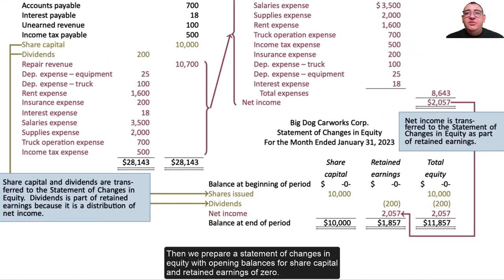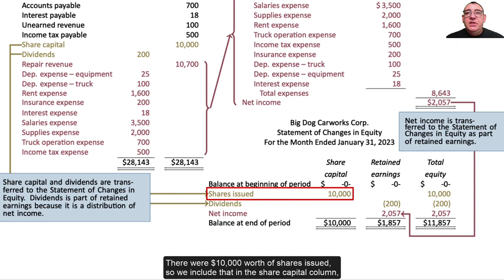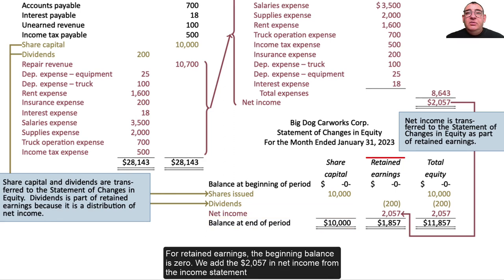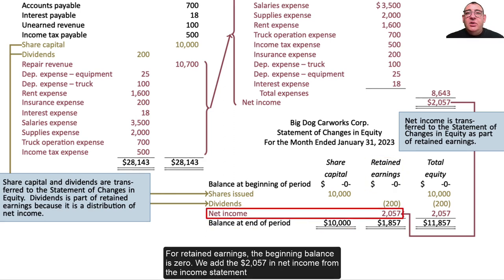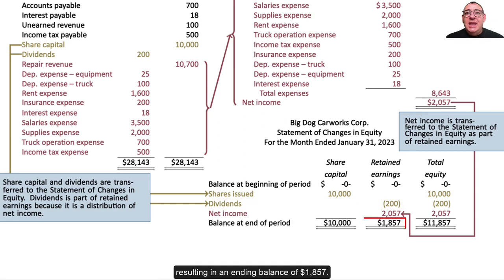Then we prepare a statement of changes in equity with opening balances for share capital and retained earnings of zero. There were $10,000 worth of shares issued, so we include that in the share capital column, and end up with a final balance of $10,000. For retained earnings, the beginning balance is zero; we add the $2,057 in net income from the income statement, and deduct $200 in dividends from the trial balance, resulting in an ending balance of $1,857.